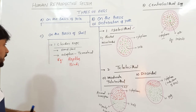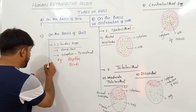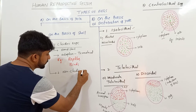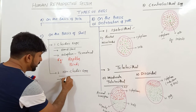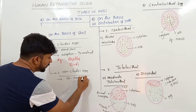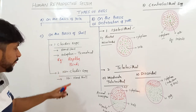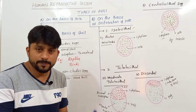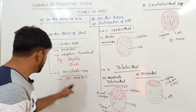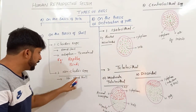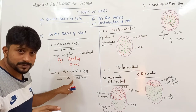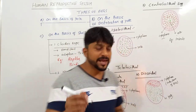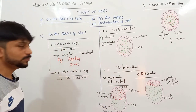Eggs without shell are Non-cleidoic eggs — without a hard shell. The eggs produced by viviparous animals, mostly viviparous mammals and also viviparous sharks, are Non-cleidoic eggs. Also, animals which are not viviparous, like fishes and amphibians where the eggs are laid in water, those are also Non-cleidoic eggs.